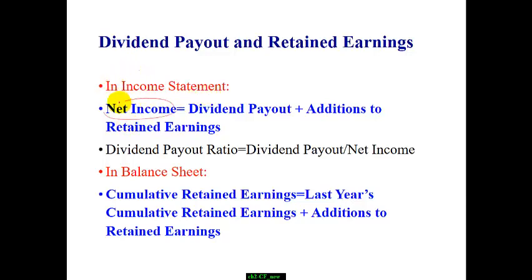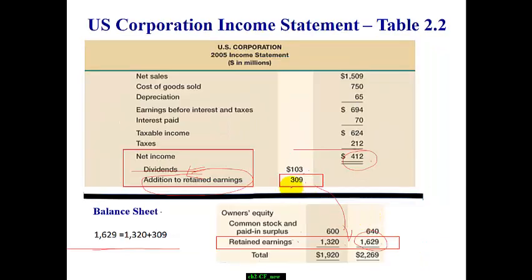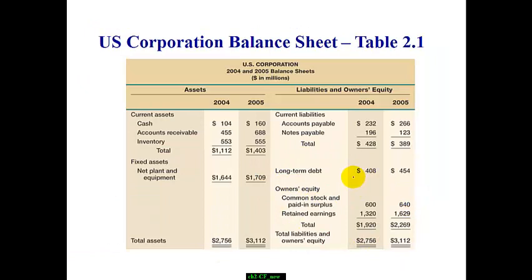Once a company makes profit, it has a choice to pay out as cash dividends to stockholders. The remaining money can be added to retained earnings reserves, which means the company keeps those funds inside for future investment. In this case, total net income is $412. After paying out $103 in cash dividends, the remaining $309 will be added to retained earnings. The prior balance in retained earnings is $1,320; once we add $309, retained earnings will go up to $1,629. This is why the income statement and balance sheet are connected.